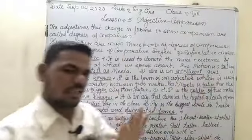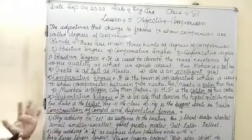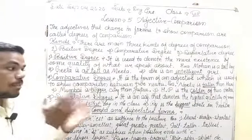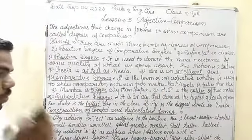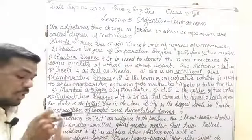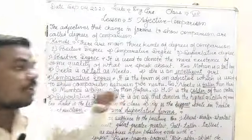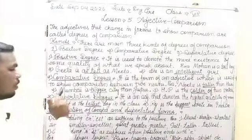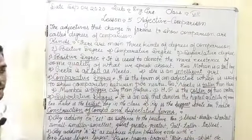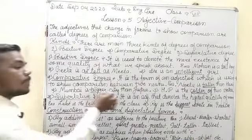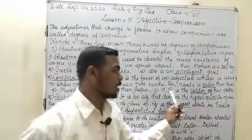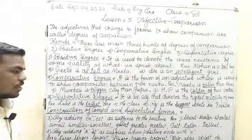Comparative degree is used to compare — to show who is more or less between two nouns. For example, 'Nitu is taller than Hari' means Nitu is taller compared to Hari. 'Mumbai is a bigger city than Jaipur.' 'Himachal is colder than the other state.' In all these, comparison is made between two nouns — Nitu and Hari, Mumbai and Jaipur, Himachal Pradesh and another state.